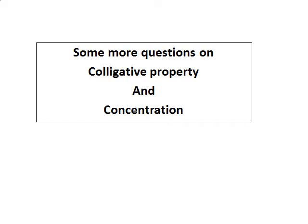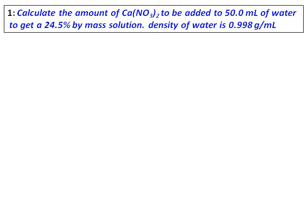We will do some more questions on colligative property and concentration. Calculate the amount of calcium nitrate to be added to 50 ml of water to get a 24.5% by mass solution.